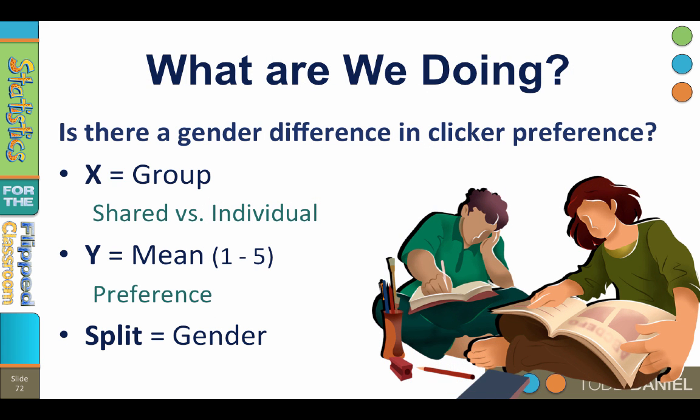So reflecting on these findings, we begin to wonder if perhaps males want their own clicker more than females. Are females more into sharing? Is there a gender difference in preference within each group? We could answer this with an ANOVA, but we can accomplish it easily with graphing. I would like to examine these same findings, splitting them by gender.